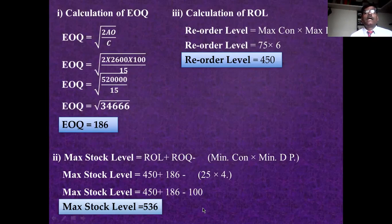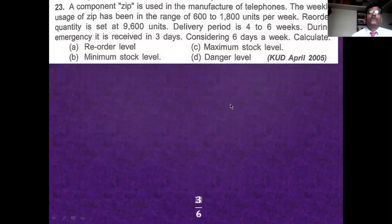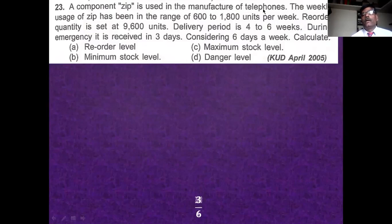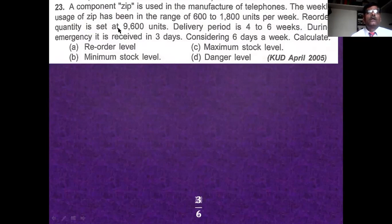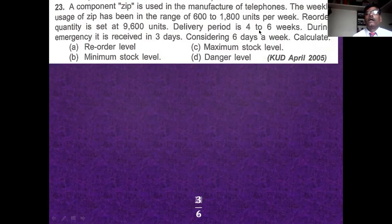In example 22 we calculated stock levels and economic order quantity. Now we see example 23. Component Zip is used in the manufacture of telephones. The weekly usage of Zip is in the range of 600 to 1,800 units per week — 600 is minimum and 1,800 is maximum. Reorder quantity is set at 9,600 units and delivery period is four to six weeks.